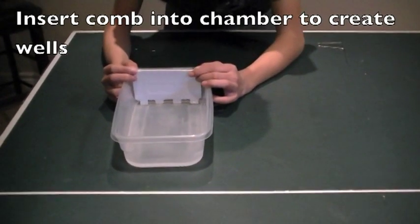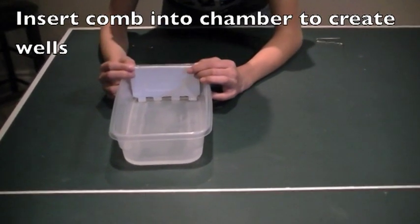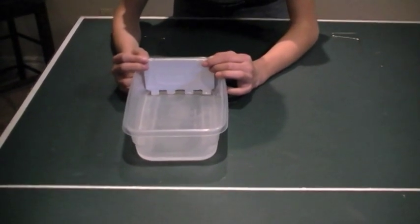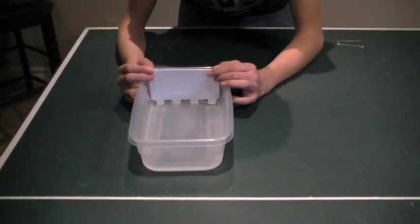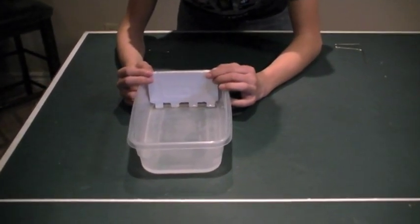Insert the styrofoam comb into either end of the gel chamber, leaving approximately 0.5 centimeters between the end of the box and the comb. Gently pour the agar solution into the gel chamber. Add just enough solution to the box so that the comb teeth are submerged approximately 0.5 centimeters.